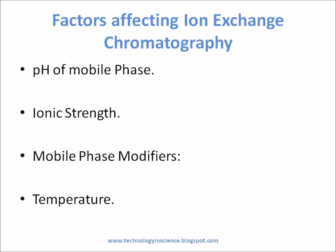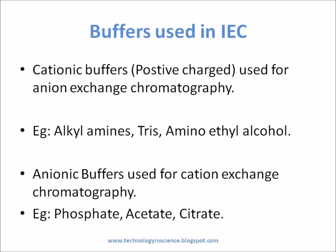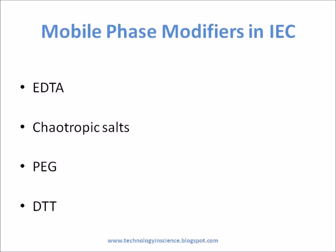Cationic buffers are used for anion exchange chromatography — examples include alkyl amines, Tris, and amino ethyl alcohol. Anionic buffers are used for cation exchange chromatography — examples include phosphate, acetate, and citrate. Mobile phase modifiers include: EDTA used for chelation, chaotropic salts such as urea for solubilization, PEG used for enhanced selectivity, and DTT used to prevent oxidation.